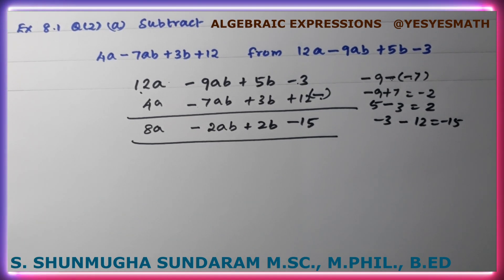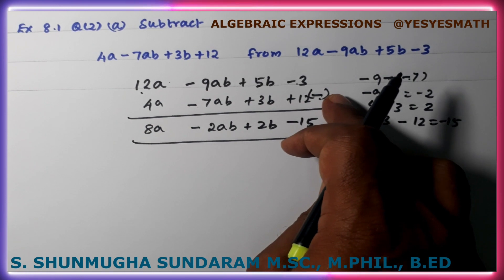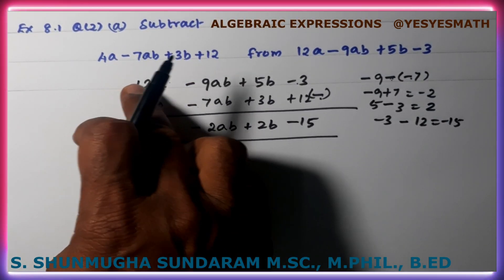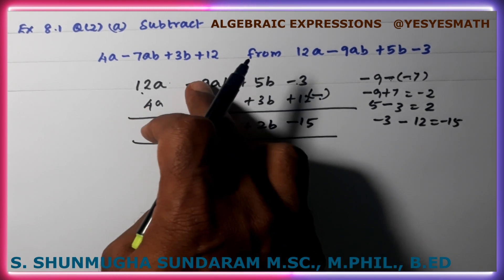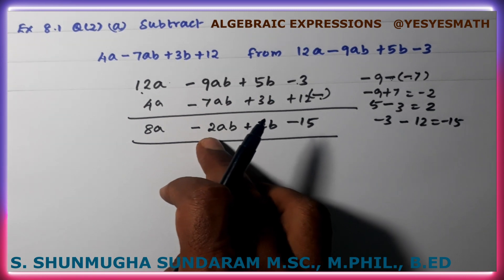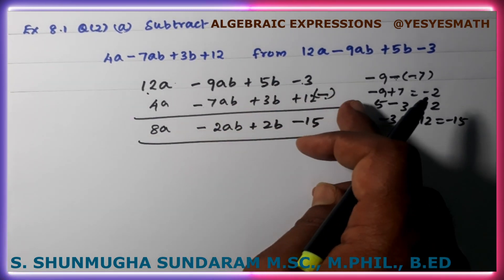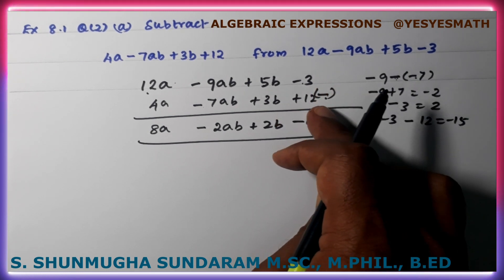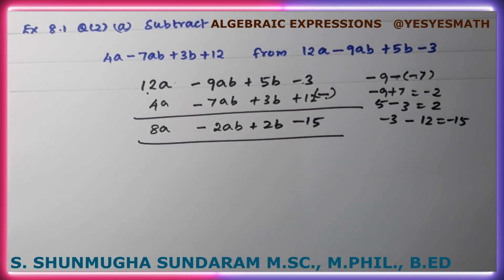Verification: 12A minus 4A is 8A. Minus 9AB minus open bracket minus 7AB close bracket: minus 9 plus 7 is minus 2AB. 5B minus 3B is 2B. Minus 3 minus 12 is minus 15. Final answer confirmed: 8A minus 2AB plus 2B minus 15.